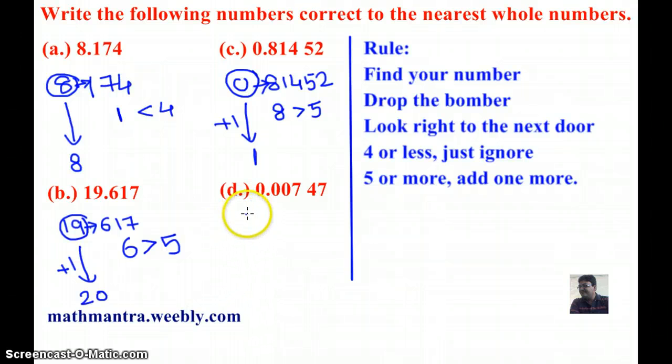And the last question, 0.00747. The whole part is 0 and the next number is again 0, which is less than 4, and therefore I must ignore and keep the whole part as it is. So my answer to the last one is 0. That's it. Thank you.